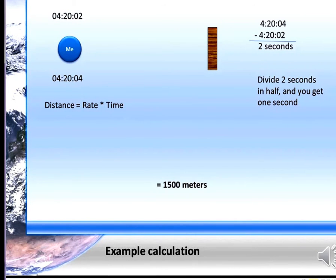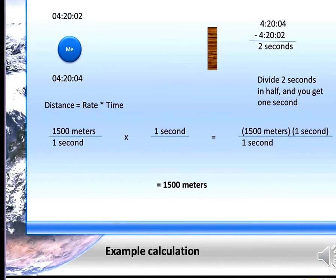So to calculate our distance, we know our rate. Remember, that's 1,500 meters per second. That's the speed of sound in water. And we multiply that times our time, which is one second. And we end up with 1,500 meters second over one second.